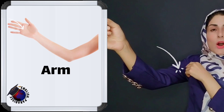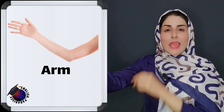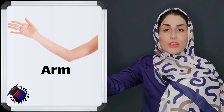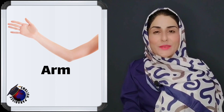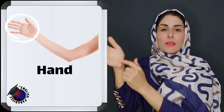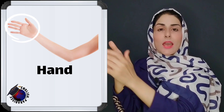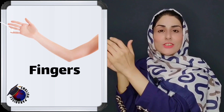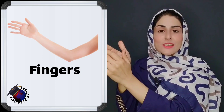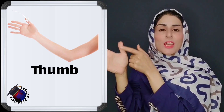This is my arm. Arm. And if your accent is British, it's arm. From here to here, this is my hand. Hand. And these are my fingers. Fingers. And this is my thumb. Thumb.